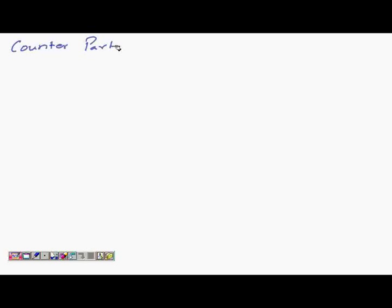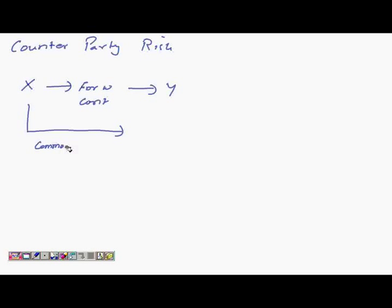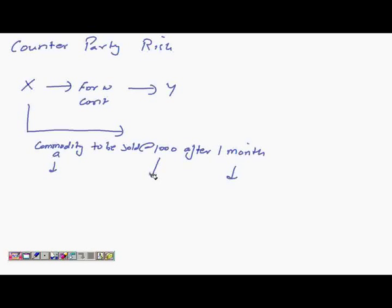If you are taking a forward contract — let's say X takes a forward contract with Y. They undertake a contract wherein X says: I'll sell you my commodity produce at a future date, one month from now, at a particular price, say 1000 rupees. So the product is specified, the time is specified, and the price is specified as of today. This contract would be executed after one month.